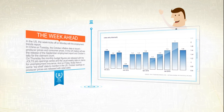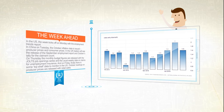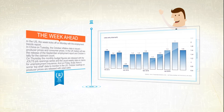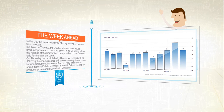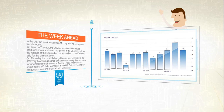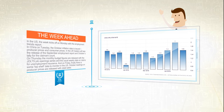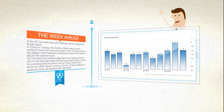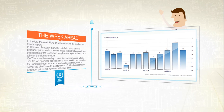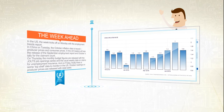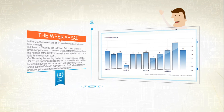In China on Tuesday, the October inflation data is issued — producer prices and consumer prices. With consumer prices up just 1.6% over the year, there is scope for China to further cut interest rates.